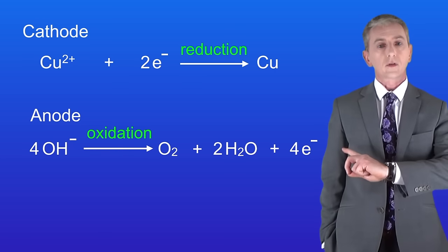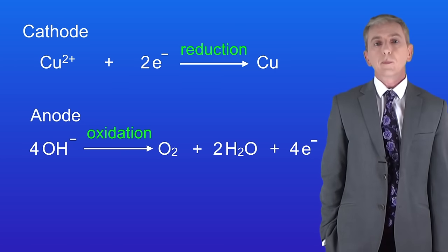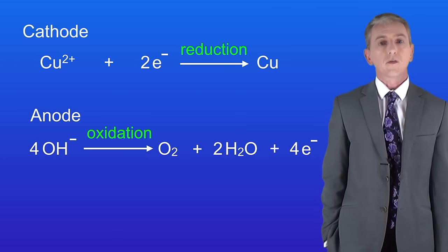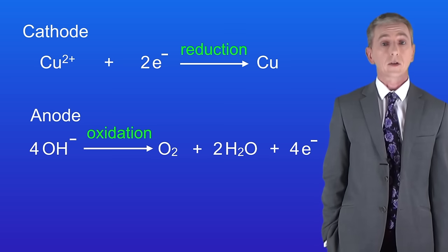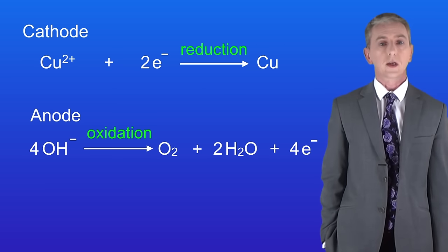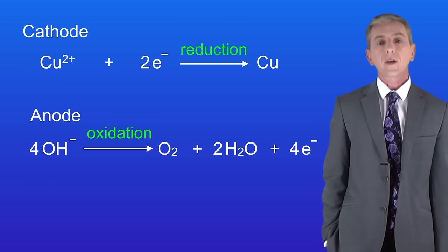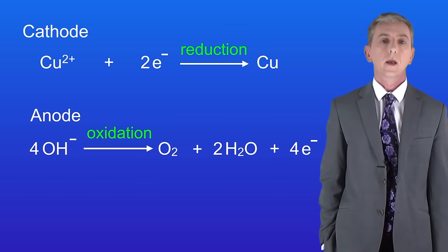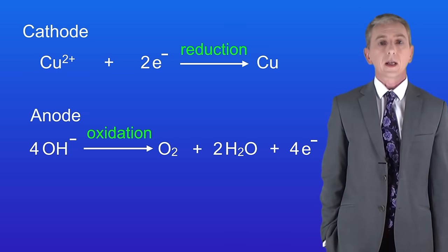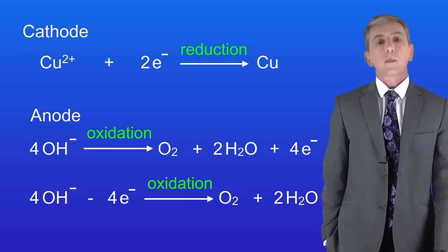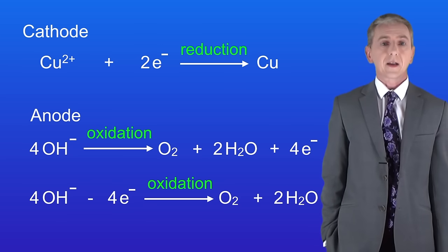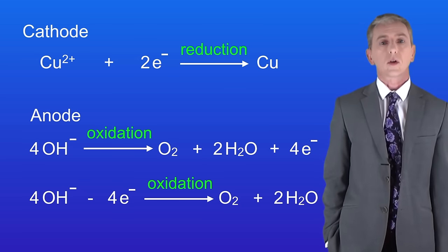Here's the half equation for the anode. This is a bit more complicated but as you can see four hydroxide ions react to form oxygen gas and water losing a total of four electrons in the process. That's an oxidation reaction. The reaction at the anode can be written like this instead but both these equations show exactly the same reaction.